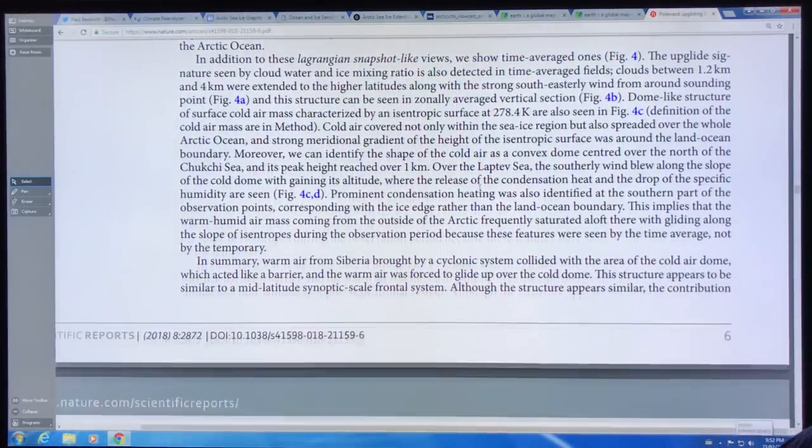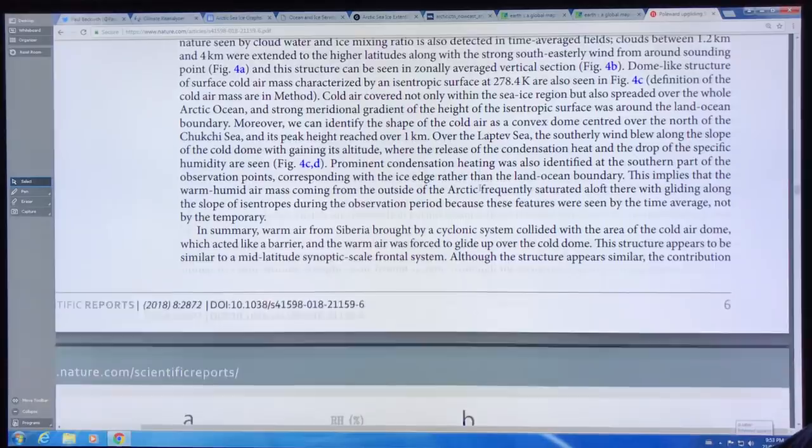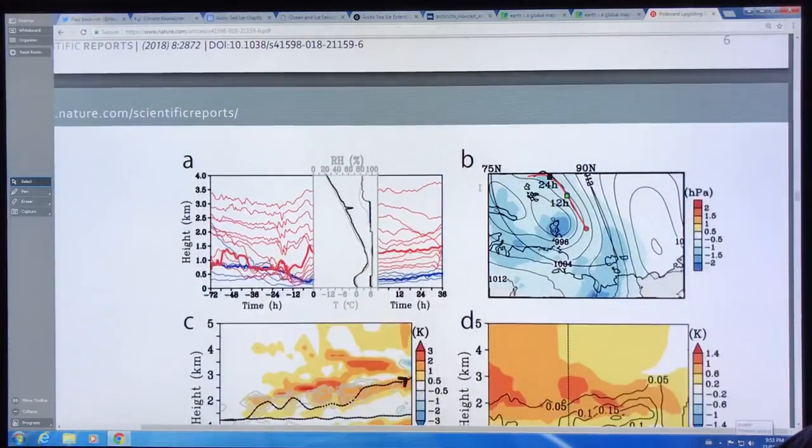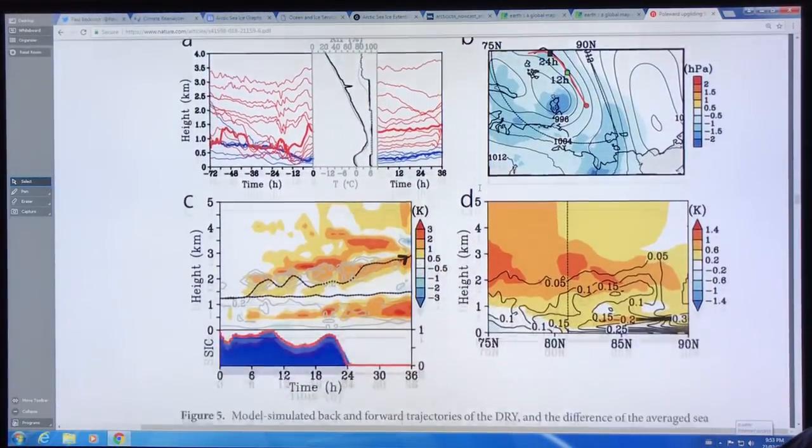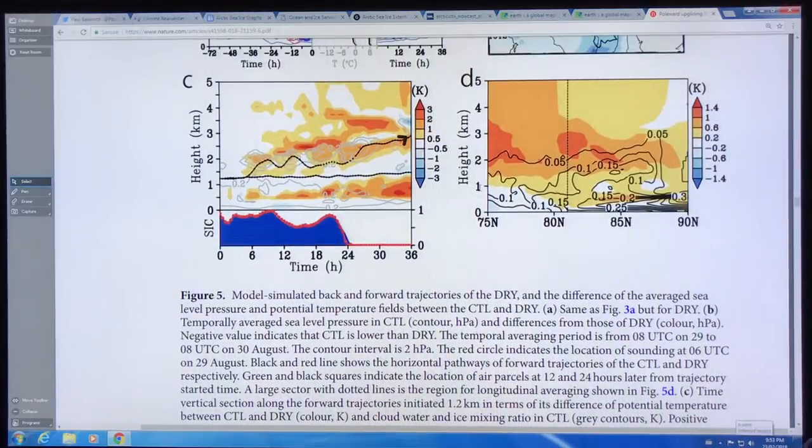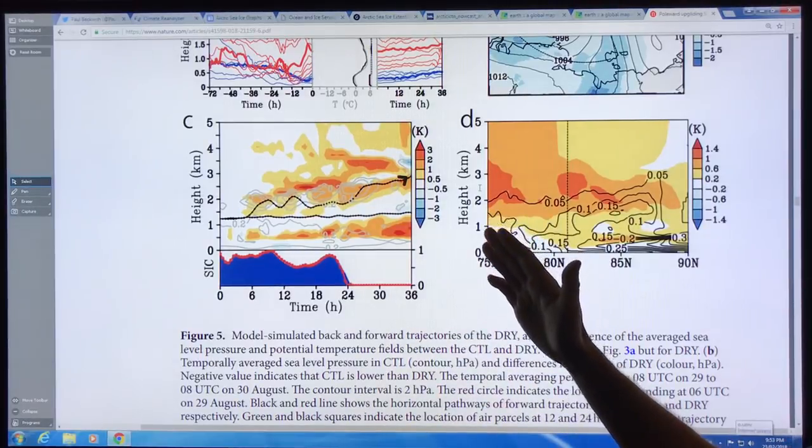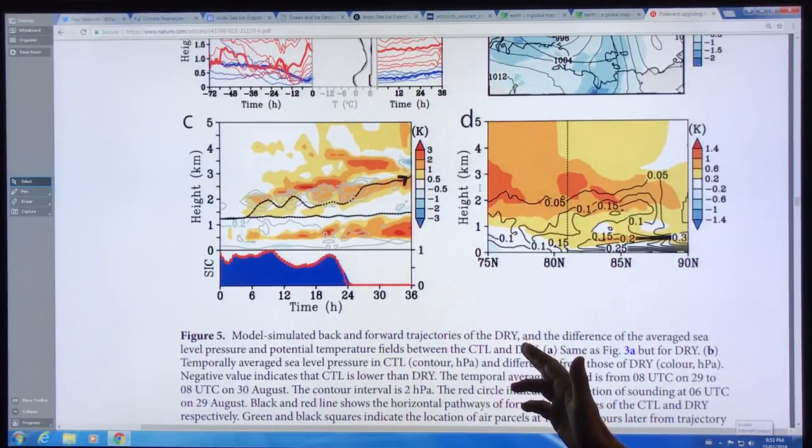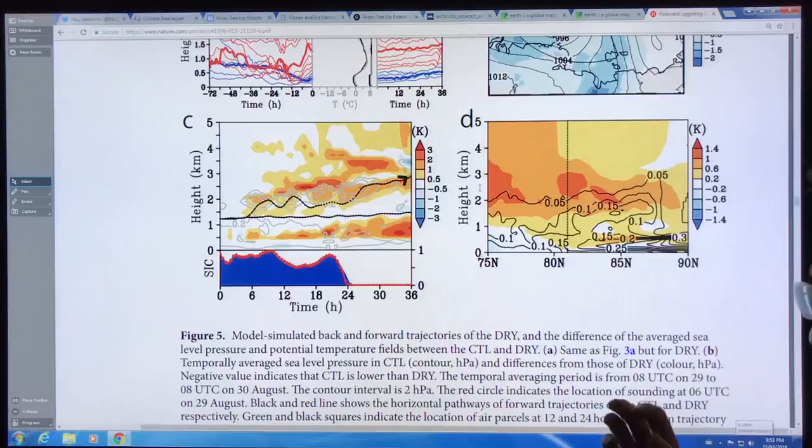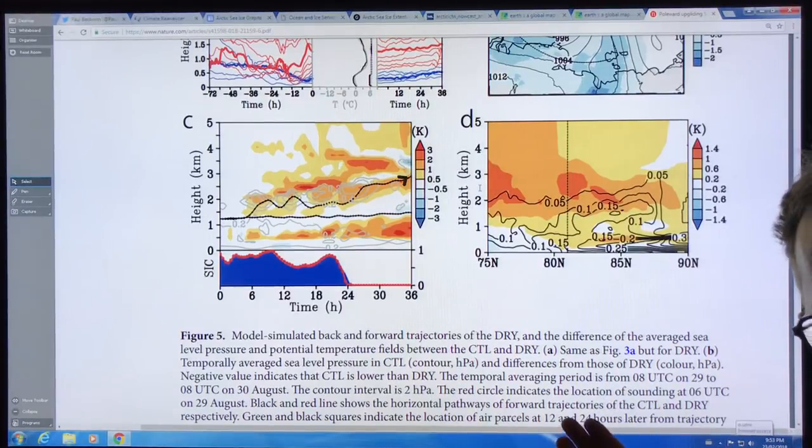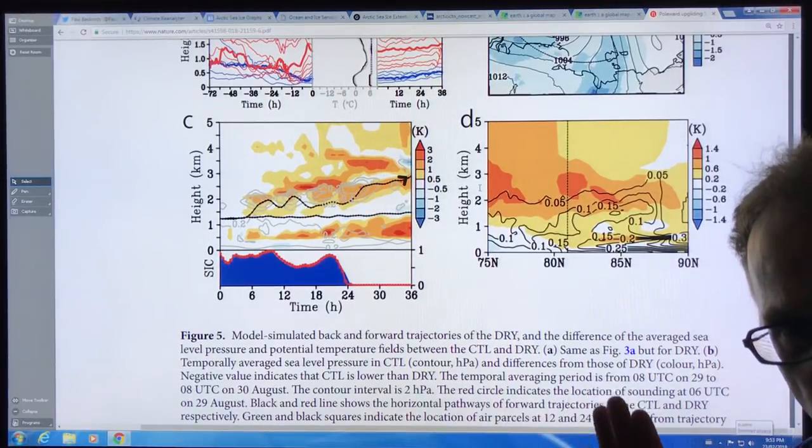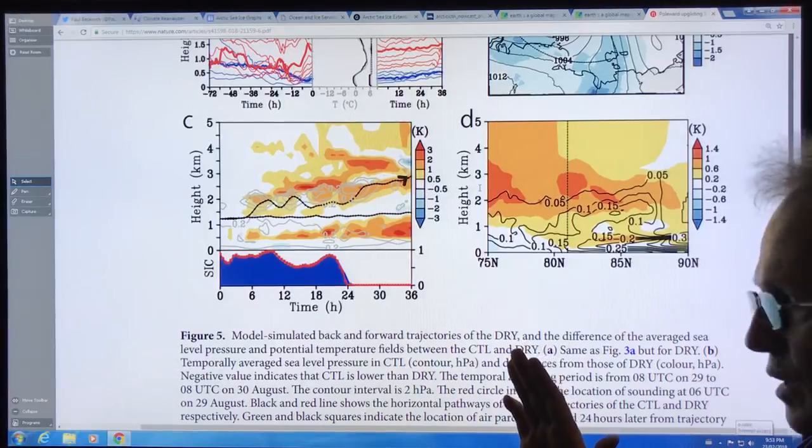Now this is interesting. This set of images is similar to the one I showed you above, only this is from the model and this is the dry condition. What they did is they assumed that there was no water vapor in the air coming from Siberia into the Arctic. It was dry.